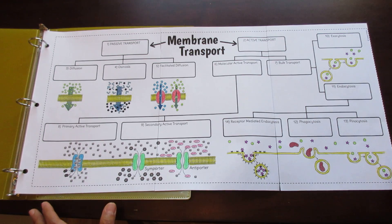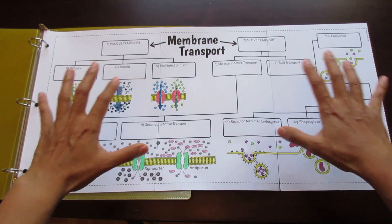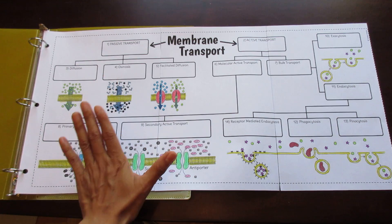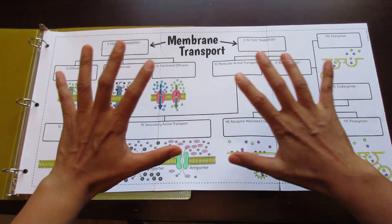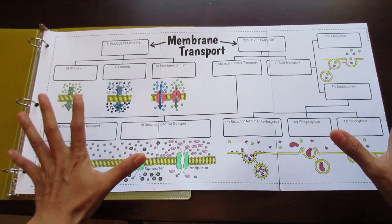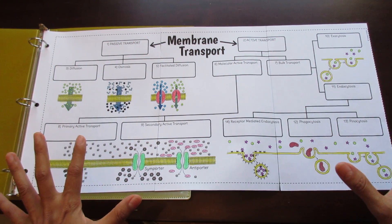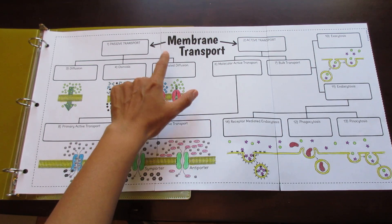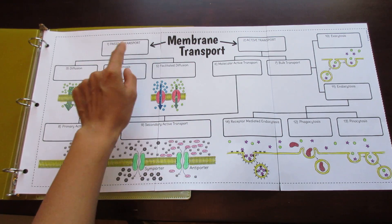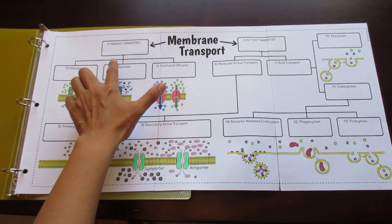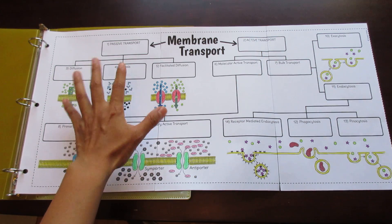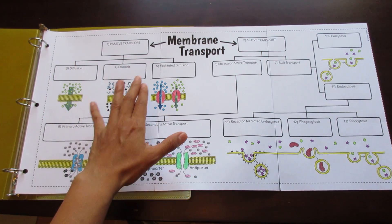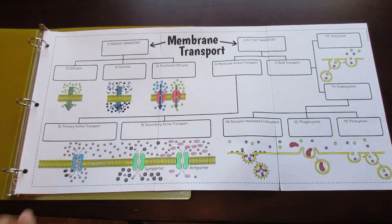Typically, membrane transport is taught in the form of a flow chart. If you take a look at this particular flow chart, it's very large and it has diagrams associated with it. Let's take a tour. First, membrane transport is divided into passive transport and active transport. For passive, you've got diffusion, osmosis, and facilitated diffusion.